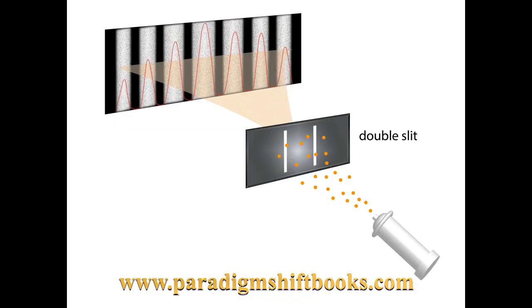There is a board with two slits, and behind the board is a photographic plate that will detect light. We will shine light through the slits.